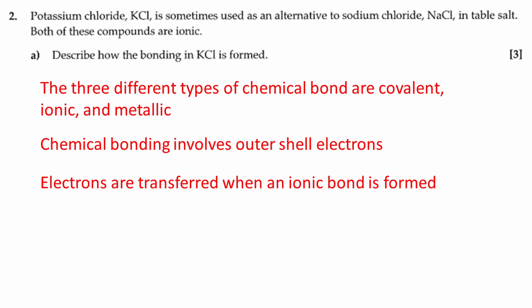There are three different types of chemical bond: covalent, ionic and metallic. Chemical bonding involves outer shell electrons. Electrons are transferred when an ionic bond is formed.